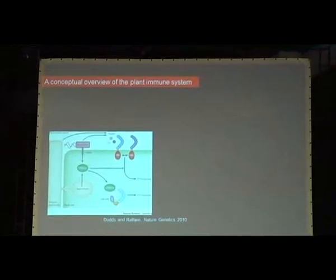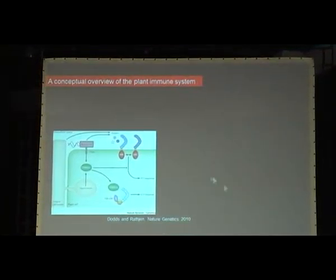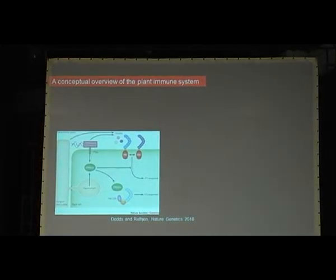Not everybody in the room is familiar with the plant immune system, so I'll give a very brief introduction. The plant immune system is kind of two-layered. The first layer, at the plasma membrane, has transmembrane receptors.